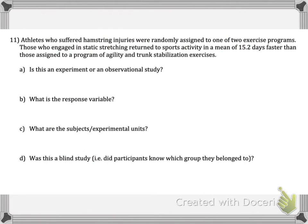Final question, number 11. Athletes who suffered hamstring injuries were randomly assigned to one of two exercise programs. Right there: random assignment to two groups — that's the very first thing they mention. Let's see if we talk about some sort of treatment in one of the groups. Those who engaged in static stretching returned to sports activities a mean of 15.2 days faster than those assigned to a program of agility and trunk stabilization exercises.